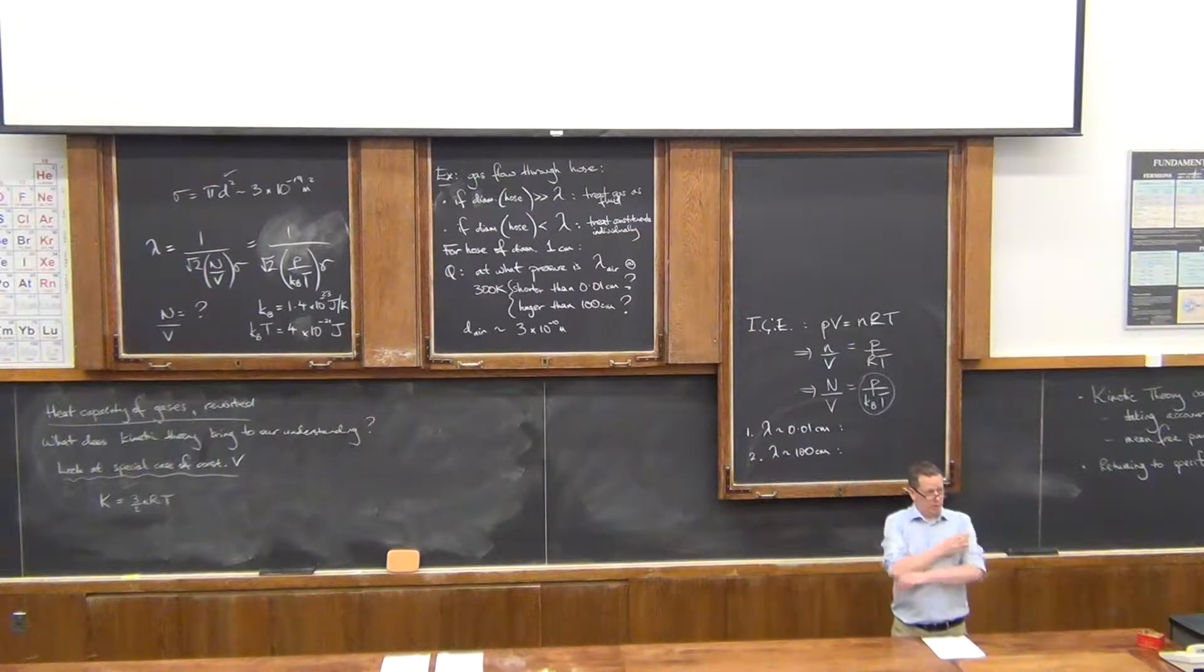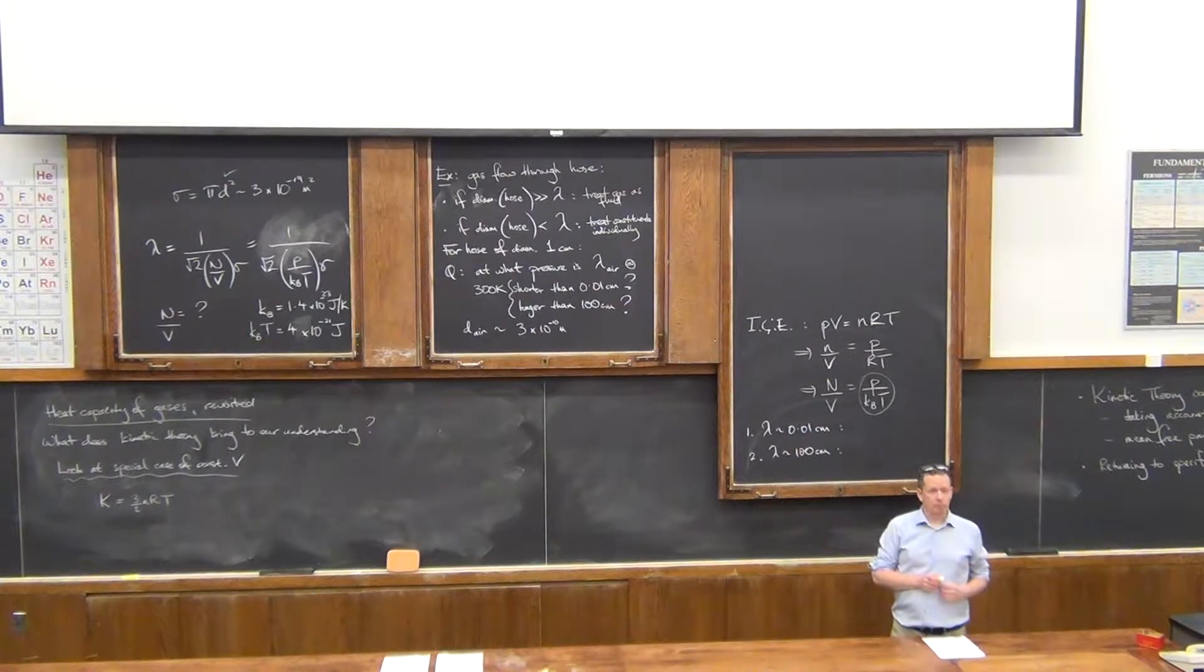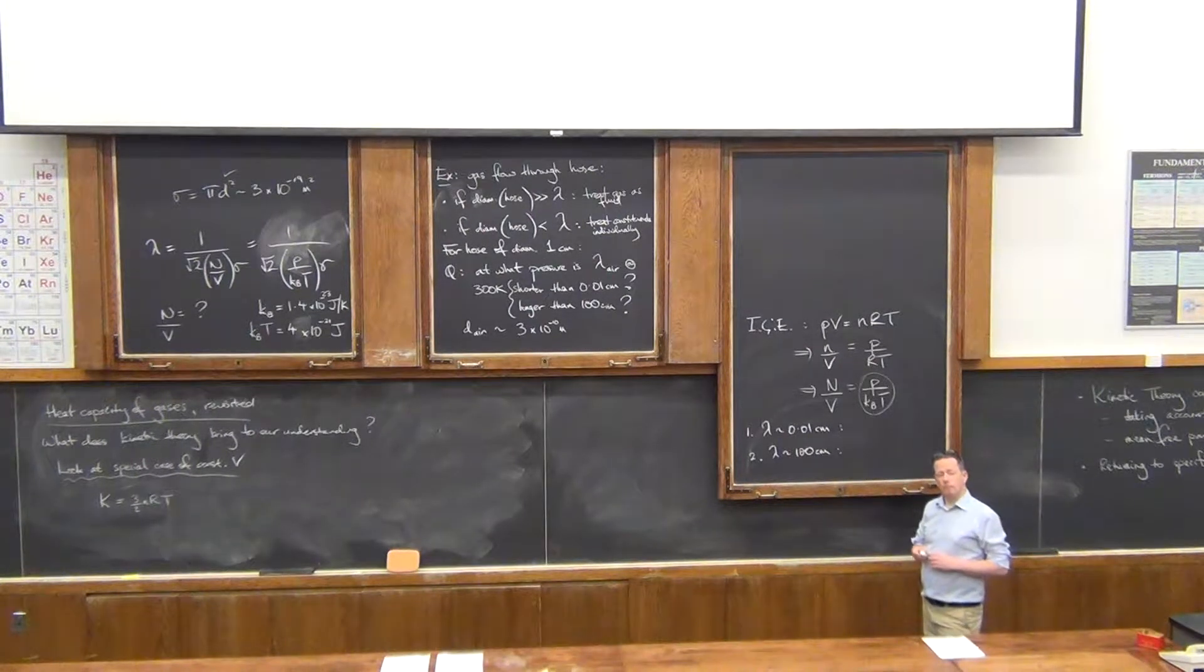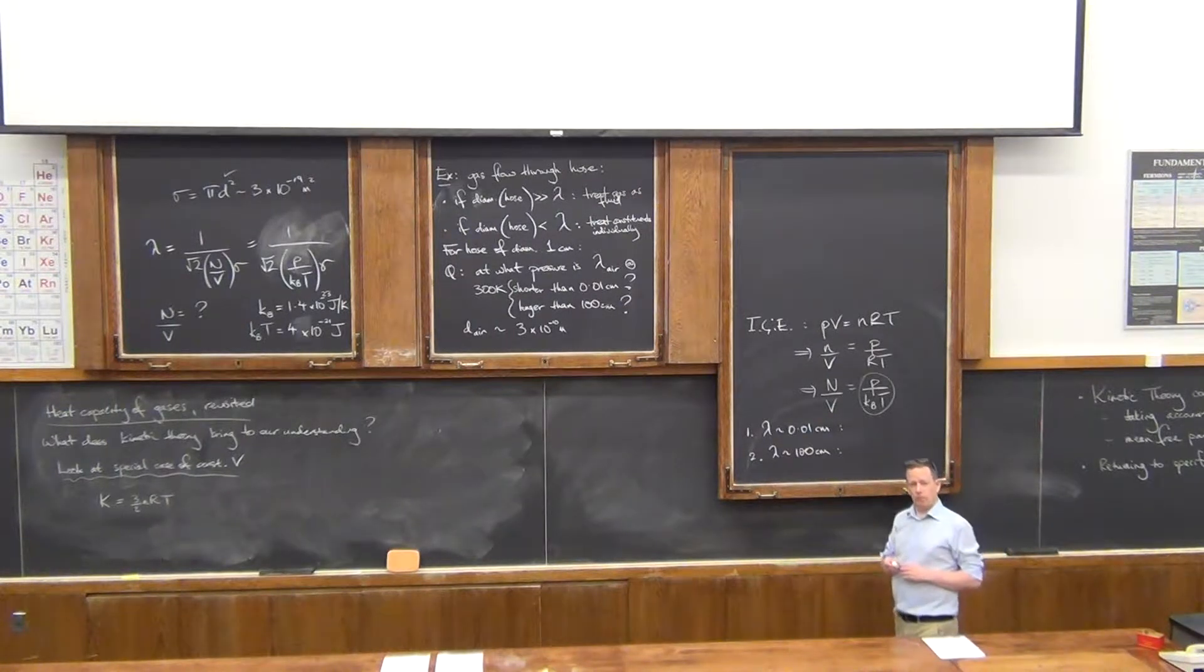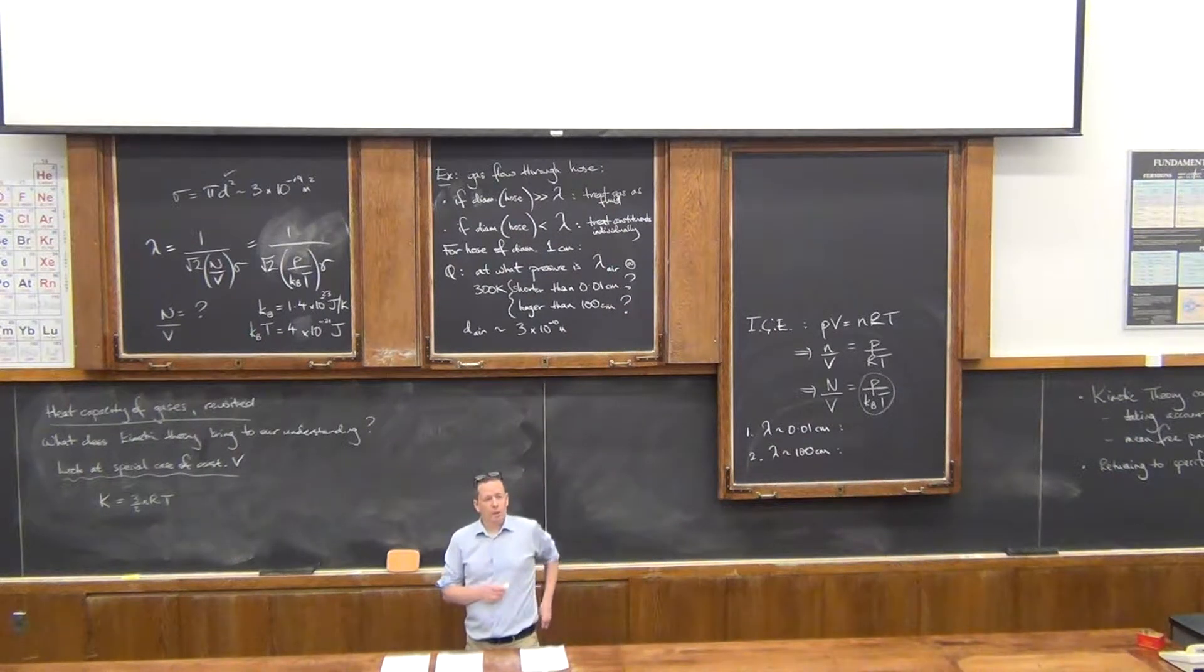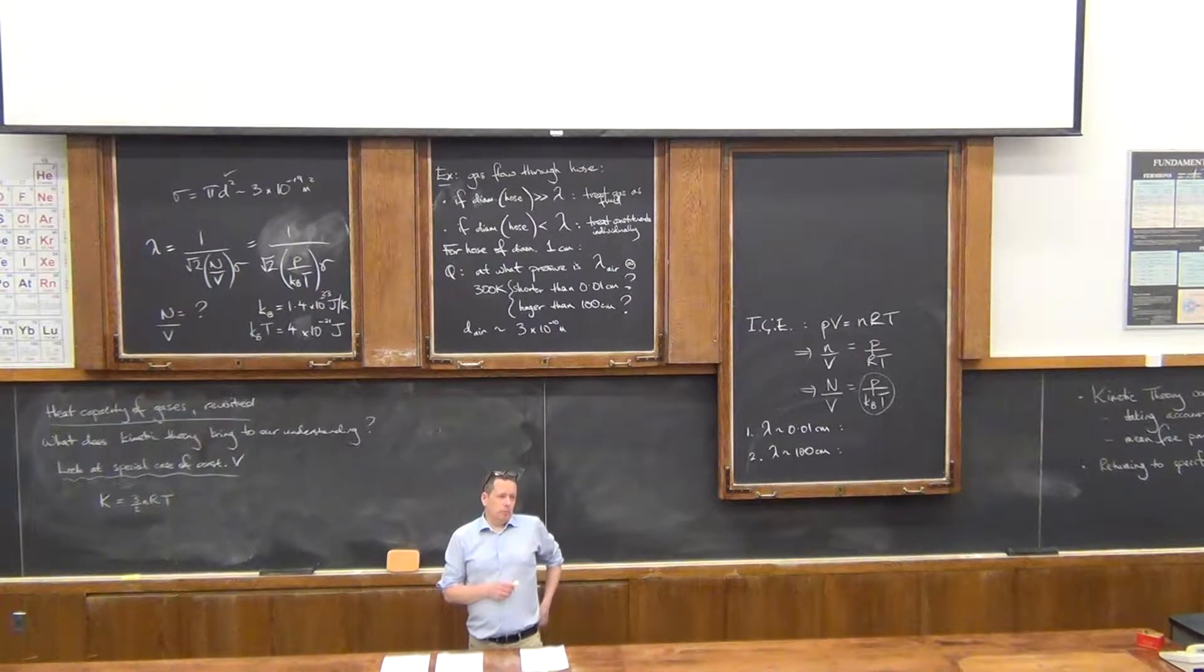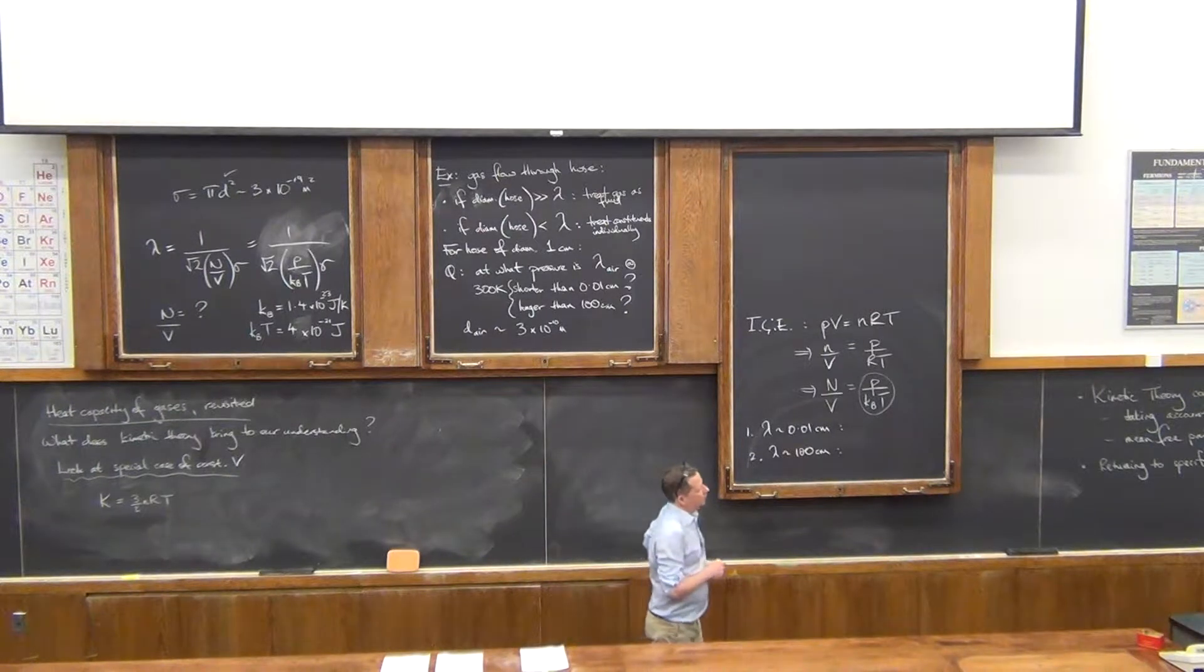You get the pressure for the 0.01 cm case. Yeah? This is just a question that's related. So for the second part, if your mean-free path is 100 cm and your hose is 1 cm, does that mean you have to treat constituents individually and solve it a different way? Can you still use the same gas equation or do you have to do something else?